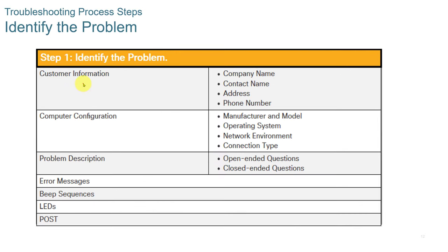Digging deeper into step one — identifying the problem — you'd gather customer information, computer configuration, and a problem description. Ask both open-ended and closed-ended questions: When did this occur? What were you doing at the time? What was the last thing you did? Users won't always give you the correct information, so you need to ask questions to draw it out. Check for error messages, beep sequences, LED lights, and the power-on self-test.